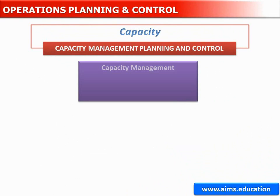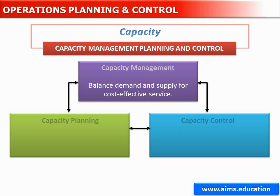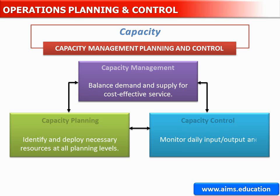Capacity management enters the picture, along with its companions capacity planning and capacity control. The overriding goal of capacity management is to keep demand and supply in harmony by ensuring that the network contains the right amount of capacity, in the right configuration, to serve customers in a cost-effective manner. Capacity planning involves identifying required resources and selecting methods of making capacity available when needed. Capacity control takes place at the level of everyday activity and is a form of input or output control.